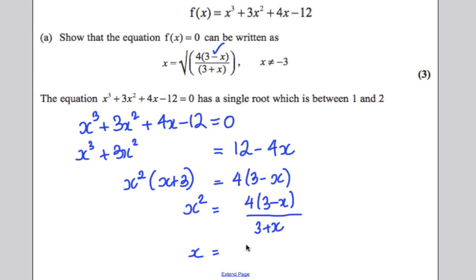And therefore, x is equal to the square root of 4(3 subtract x) over (3 plus x). And the key thing is they tell us x can't be negative 3 because if it was, the bottom would be 0 and you can't divide by 0. Simple as that.